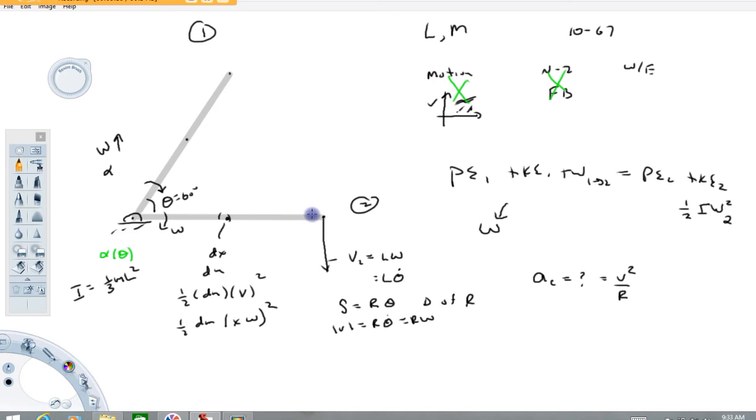So that should be enough on this problem. Use work energy between one and two to get the rotational speed, the angular velocity of the bar, and then use v equals r times the angular velocity to get the speed of the tip. So hope this helps. Have a great day.